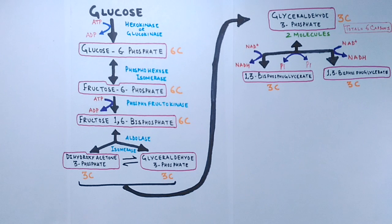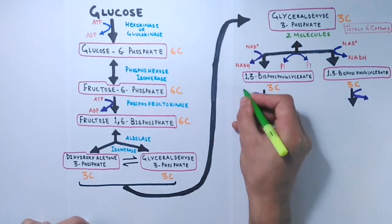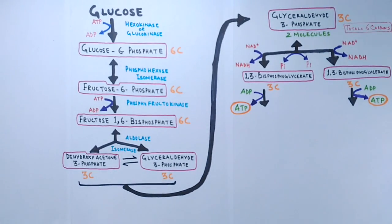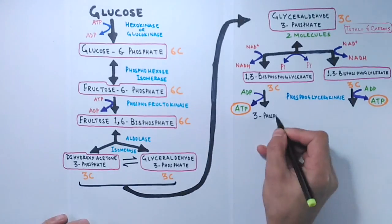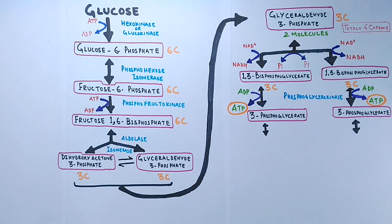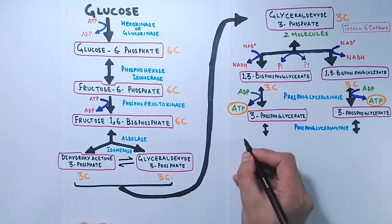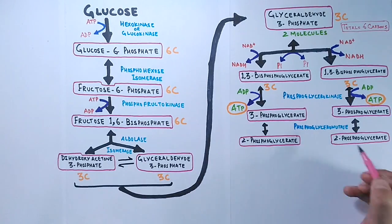Now in the proceeding step we see the enzymatic transfer of phosphate group from 1,3-bisphosphoglycerate to ADP by phosphoglycerokinase, forming ATP and 3-phosphoglycerate. And then in the next reaction we see isomerization where phosphoglyceromutase isomerizes 3-phosphoglycerate into 2-phosphoglycerate.